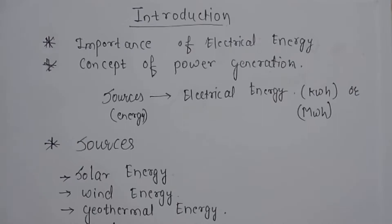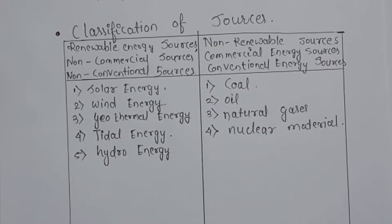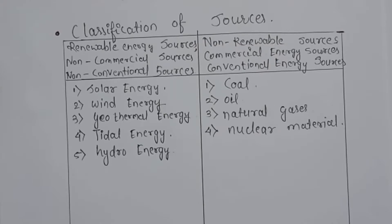We saw how we transform energy into electrical energy. Next, we saw the classification of energy sources — renewable energy sources and non-renewable energy sources. Renewable energy sources are also called non-commercial or non-conventional sources. Examples include solar energy, wind energy, geothermal energy, tidal energy, and hydro energy.